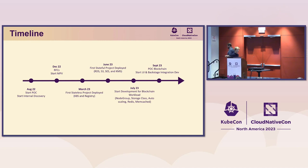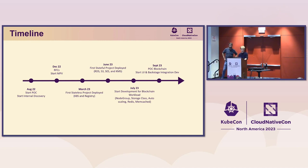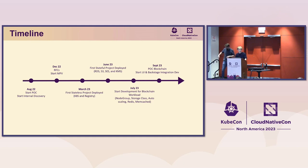To give a rough idea of how we made progress: this is the timeline. We started back in August 2022, POC-ing on AWS. In parallel, we also started internal discovery — talking with all stakeholders across the company to better understand needs and how we could support them.